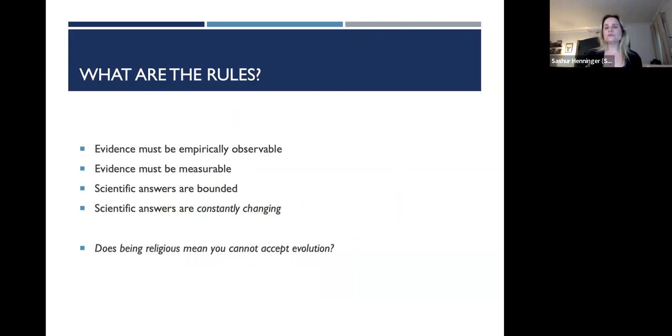What are the rules of the scientific method in general? Well, first, evidence must be what we call empirically observable. You have to be able to observe it with your senses, we have to be able to measure it. We can't always see or hear everything with our basic senses, but we have developed all sorts of technology that can see things we can't see and hear things we can't hear and smell things we can't smell. As long as it is measurable to some degree, then we can study it from a scientific perspective. Scientific answers are bounded. The answer to the light bulb question is bounded by laws, laws of physics and things like that.